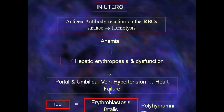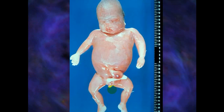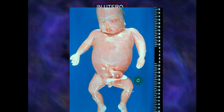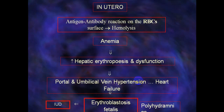In utero, the antigen-antibody reaction on the RBC surface leads to hemolysis. This hemolysis subsequently causes anemia, increased hepatic erythropoiesis, hepatic dysfunction, portal and umbilical vein hypertension, and heart failure, potentially leading to erythroblastosis fetalis as shown in the picture, intrauterine death, or polyhydramnios.